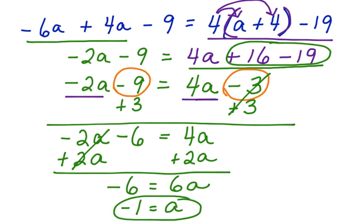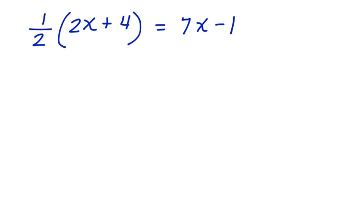Here's another one. 1 half times the quantity 2x plus 4 equals 7x minus 1. Again, the first thing to notice is that you have a set of parentheses here. So we have to use the distributive property.